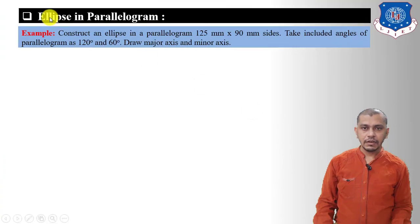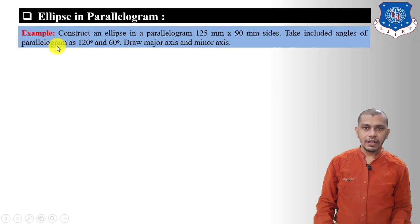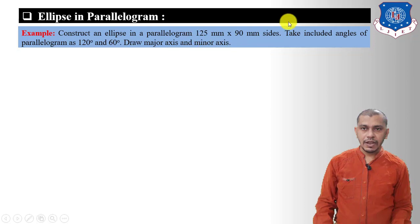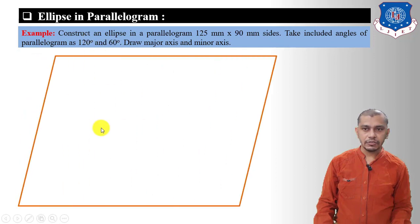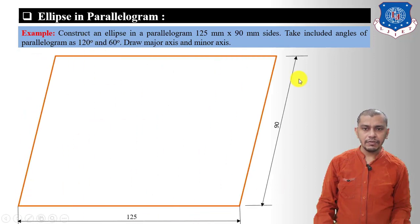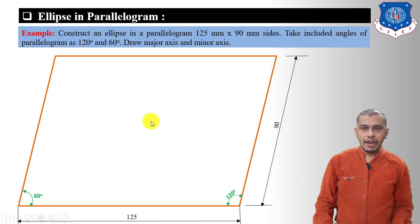Now let's move on to the next method: ellipse in parallelogram. Construct an ellipse in a parallelogram with sides 125 mm and 90 mm, with an included angle of 120 degrees and 60 degrees, and draw the major axis and minor axis of the ellipse. Note that 125 mm and 90 mm are not the major axis and minor axis. First, draw the parallelogram and mark the midpoint of each side.